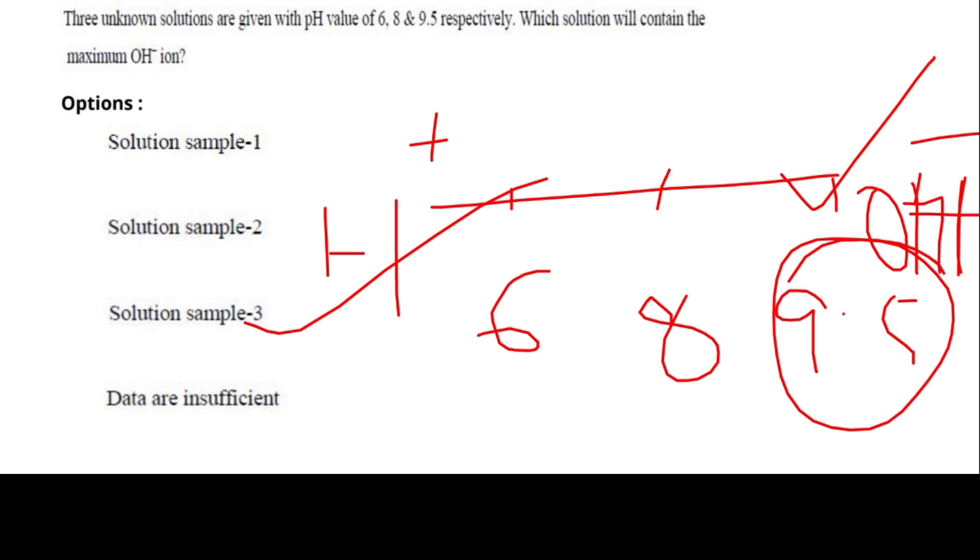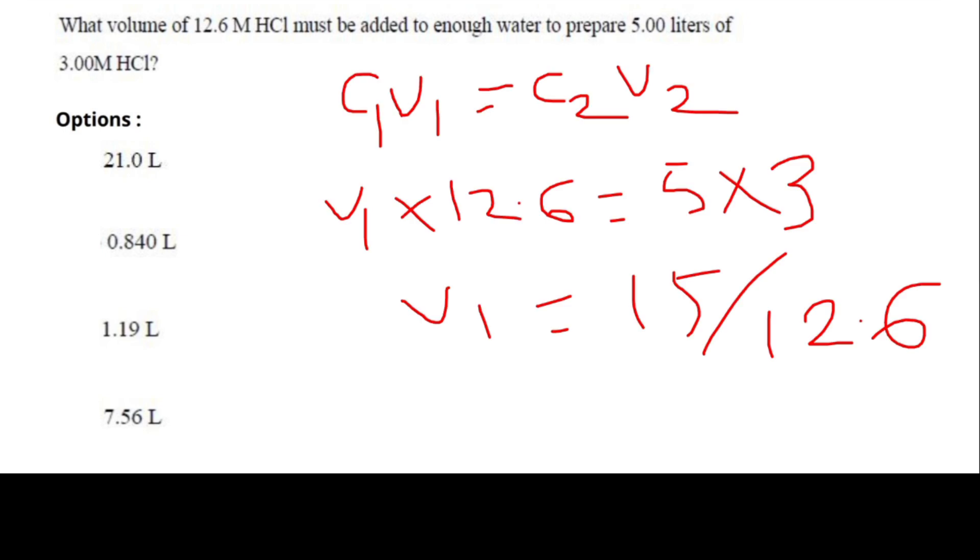Next question: what volume of 12.6 M HCl must be added to enough water to prepare 5 liters of 3 molarity HCl? Here, if you look into this, to solve this problem we can take that C1V1 equals to C2V2. Here we don't know how much water has to be added, so V1 × 12.6 = 5 × 3. By doing 15 / 12.6, we will get the answer as 1.19 liters. So option 3 is correct.